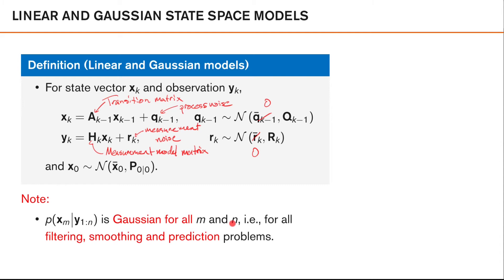What this means is that for linear Gaussian models, all our densities are Gaussian irrespectively if we look at the filtering, the smoothing, or the prediction problem.